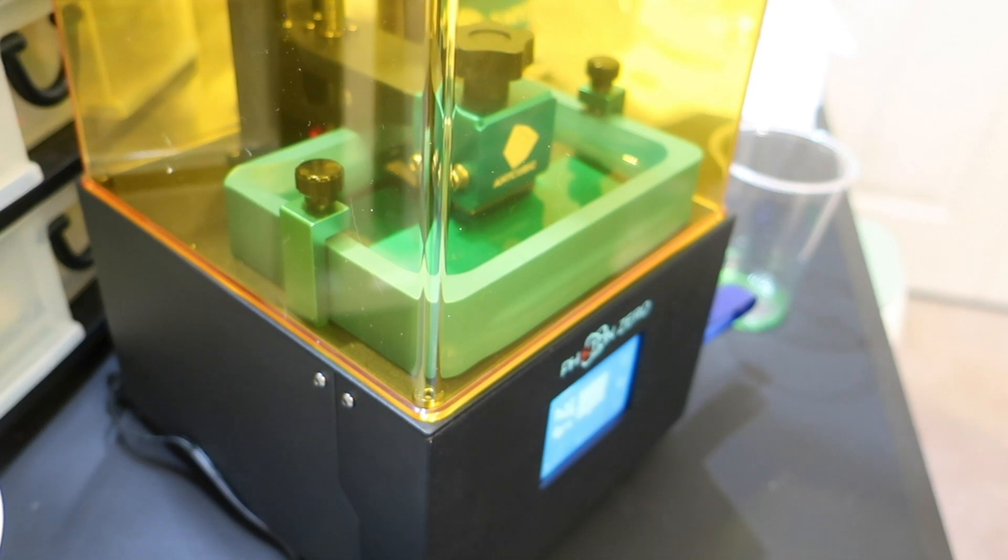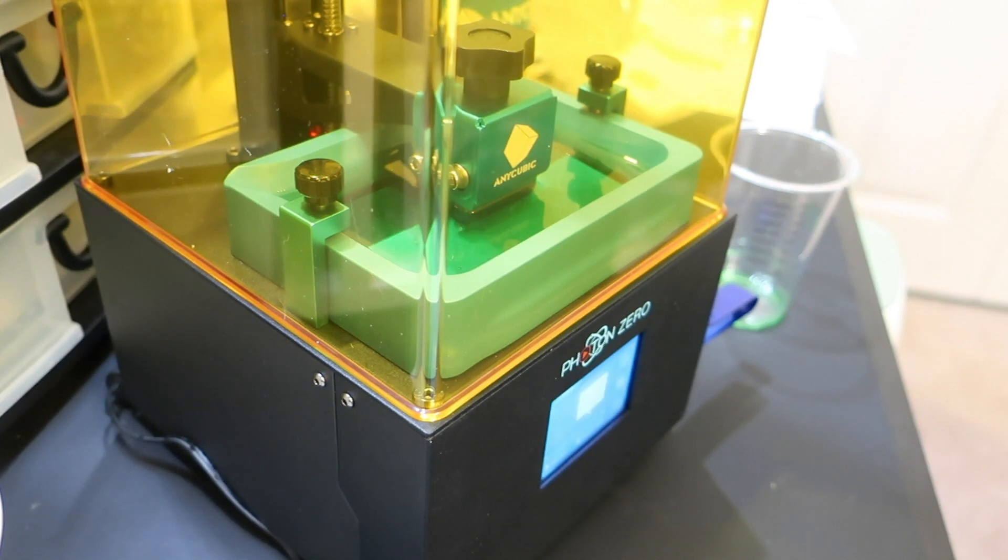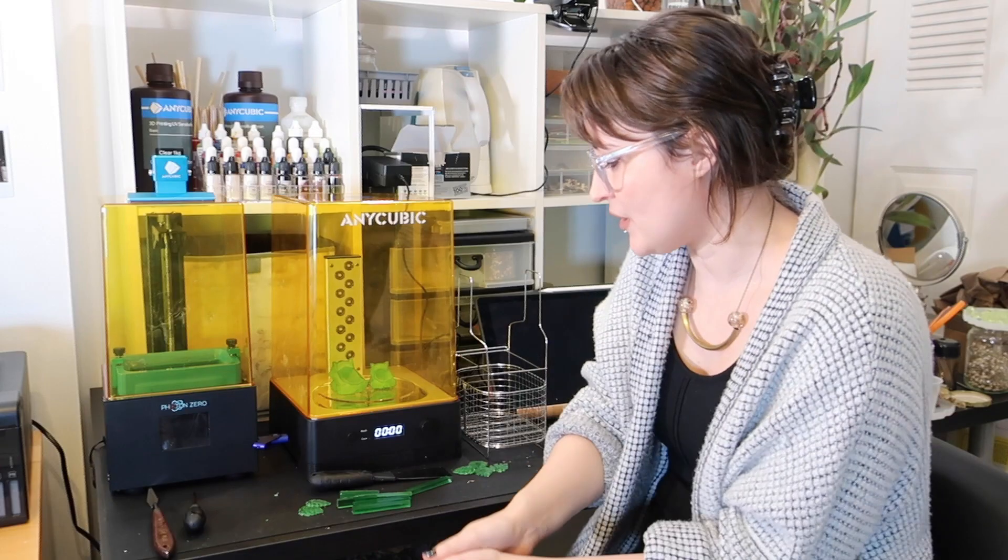So it will attach itself ideally to the build plate and detach itself from the bottom, and it builds up layers like that one by one until you get your finished piece. So that's how the 3D printer works. It's pretty much ingenious.